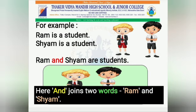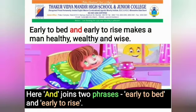Instead of repeating 'is a student', we can join the words Ram and Shyam with the conjunction 'and'. Ram and Shyam are students. Here, 'and' joins two words: Ram and Shyam. In 'Early to bed and early to rise makes a man healthy, wealthy and wise', 'and' joins two phrases: 'early to bed' and 'early to rise'.